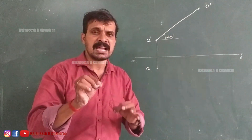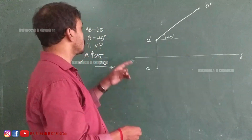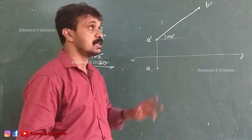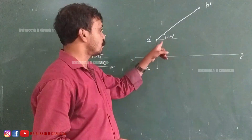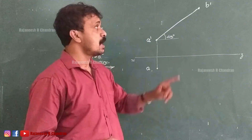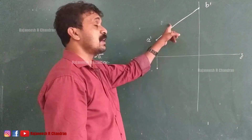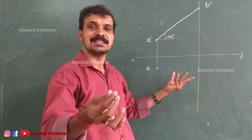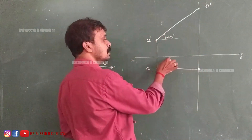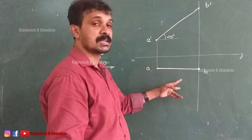Once you obtain b', draw the projector line through b'. Since a'b' is showing the true length, its opposite projection ab will be a line parallel to XY. Draw a line through b' perpendicular to XY and intersect it with a line parallel to XY through a to locate b. The projection is now complete — this is a'b' and this is ab.